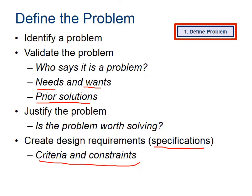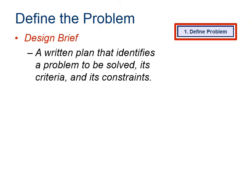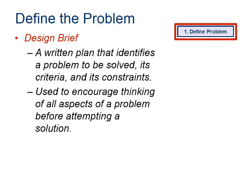Does your problem have a weight limitation? Does it have to be less than 10 pounds? Does it have to fit inside a bread box? Does it have to go 50 miles an hour as a minimum? Those kinds of things — you have to understand what those are. You put all of those together in one document, and it's shown in red to indicate it's a deliverable. That's called a design brief, and it has all of these things. A design brief is a written plan that identifies the problem and its criteria and constraints. It's usually a really short document used as the guiding document during your engineering design process.